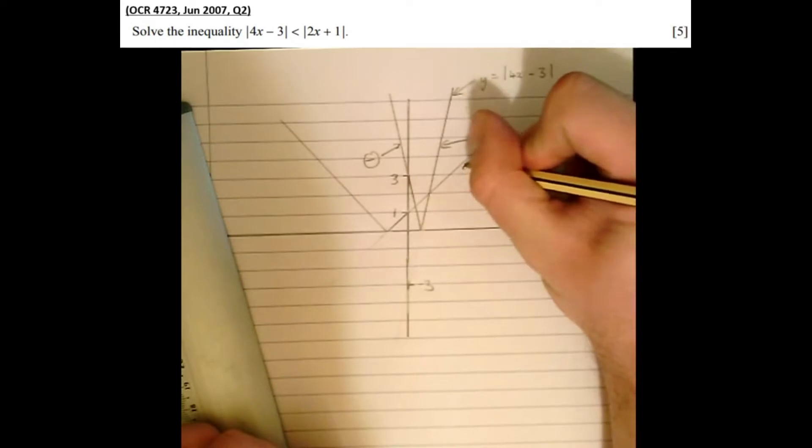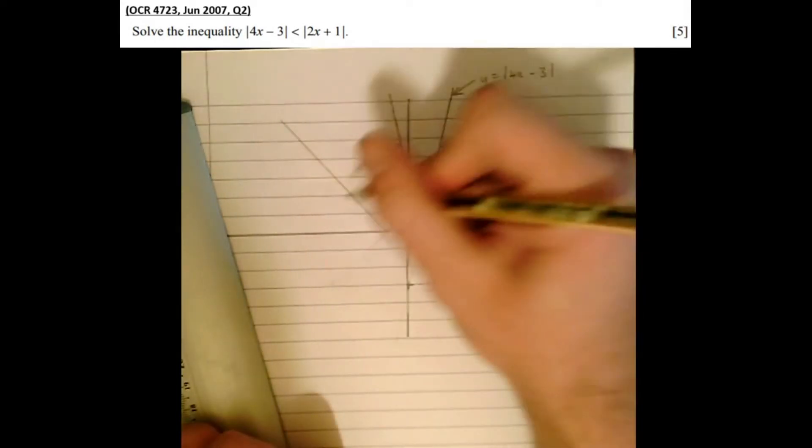And again, this was the original positive part of the graph, and the reflected part, the negative part, is there.